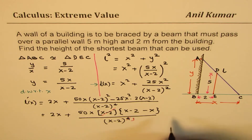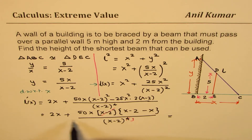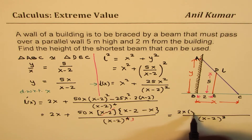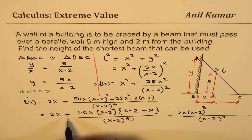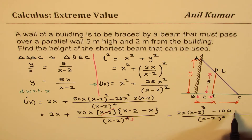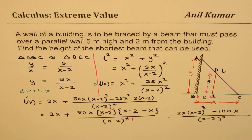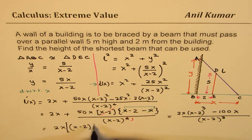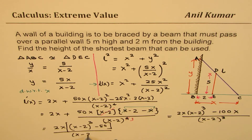Taking a common denominator of (X minus 2)³, we multiply 2X by (X minus 2)³. Since X minus X equals zero, we are left with minus 100X. Taking 2X common, we get 2X times [(X minus 2)³ minus 50] divided by (X minus 2)³.